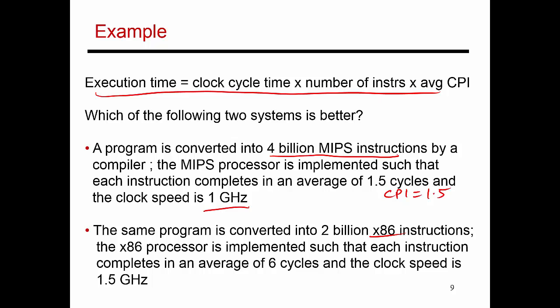Similarly, on the other processor, the compiler is able to convert the program into two billion instructions. And the architecture is such that it can be implemented with a clock speed of 1.5 gigahertz. That is a faster clock speed. But on average, every instruction takes longer to finish. That means I have a CPI of six.